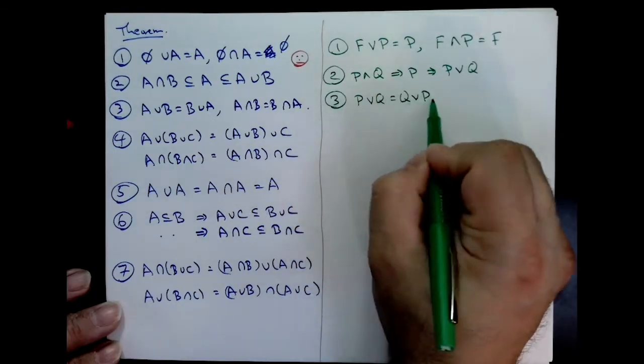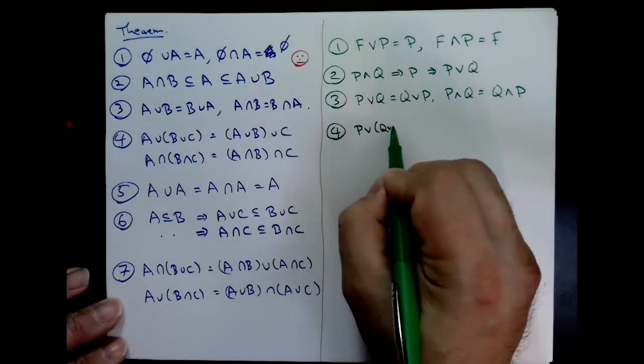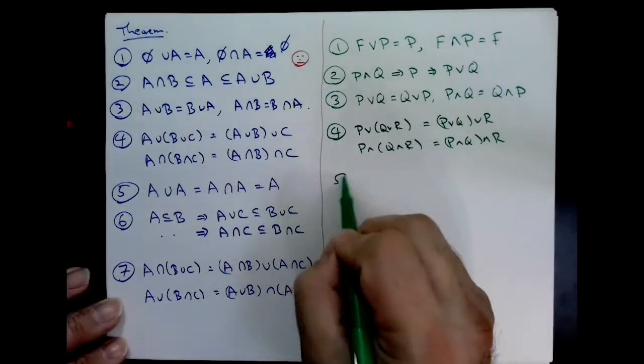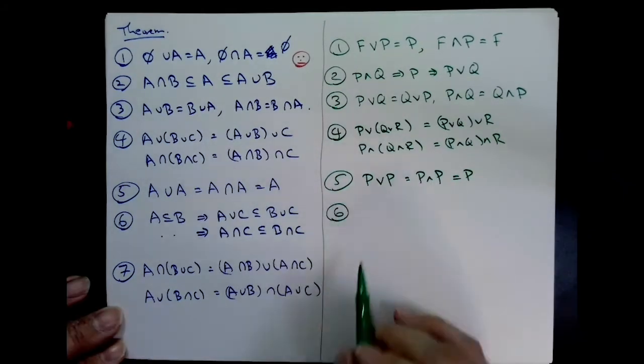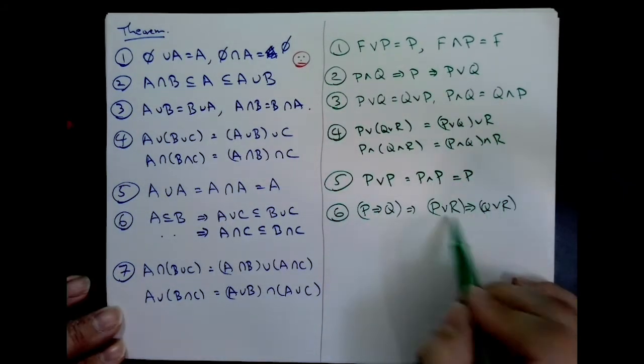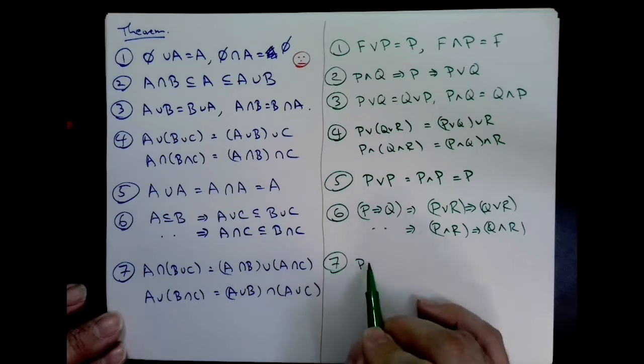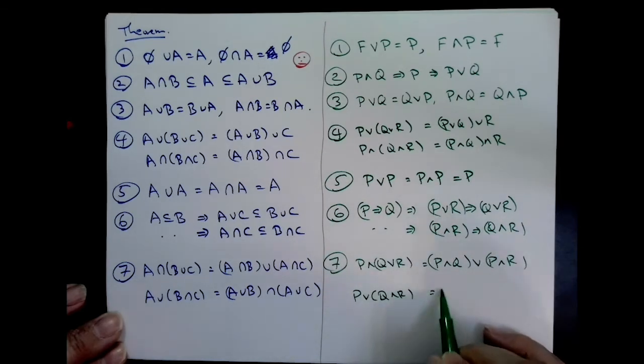But let me also point out that there's a parallel set of logical identities that you can see on the other side. Anyway, these are basically all the identities that don't use complements, and they're all in one place.